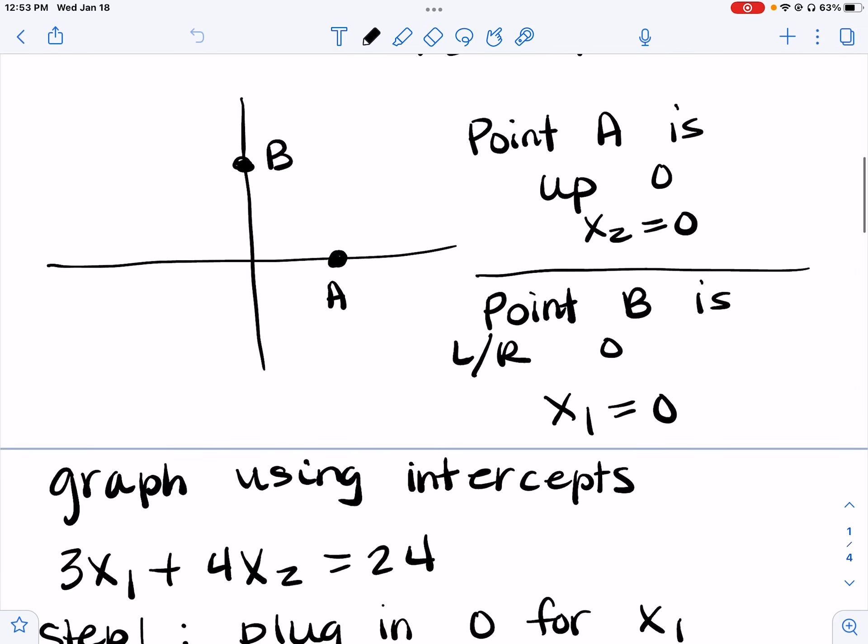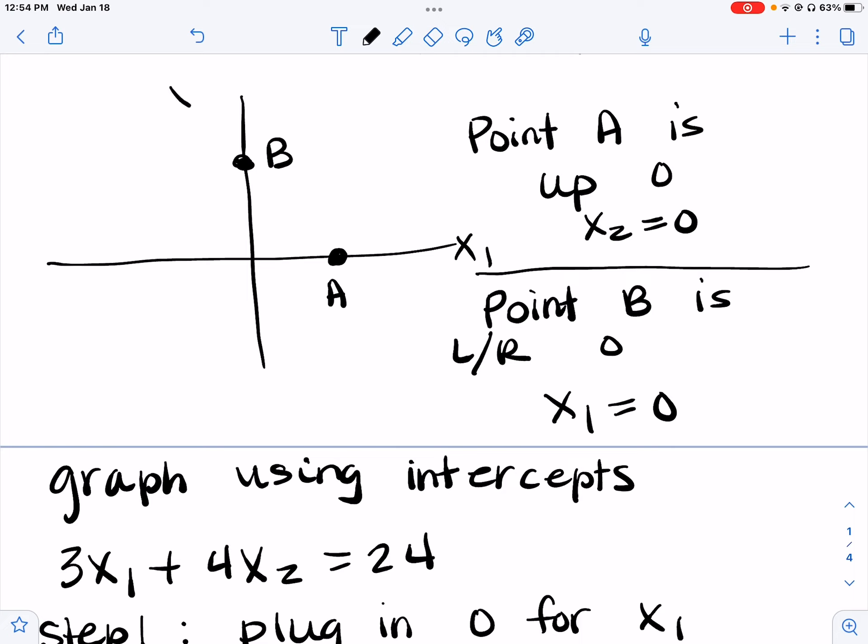Okay, so point A is up zero, so the x2 would be zero there. x1 is our over and x2 is our up and down. In point B, point B is left or right zero, so that would mean x1 is zero on point B.